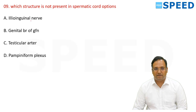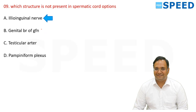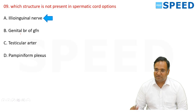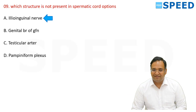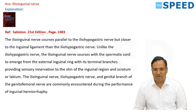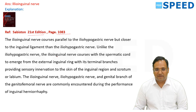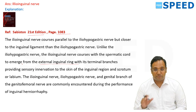Which structure is not present in the spermatic cord? The answer is the ilioinguinal nerve. The ilioinguinal nerve is closely associated but not a structure within the cord. Structures within the cord include the genital branch of the genitofemoral nerve, testicular artery, and pampiniform plexus. The ilioinguinal nerve is outside the cord but within the inguinal canal, as explained in Sabiston 21st edition, page 1083.